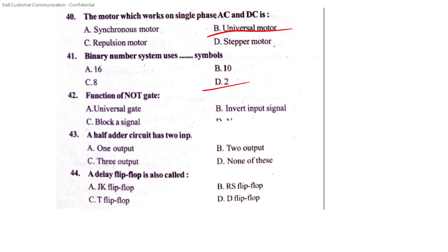A NOT gate inverts the input signal. A half-adder circuit has two inputs. A delay flip-flop is also called a D flip-flop.